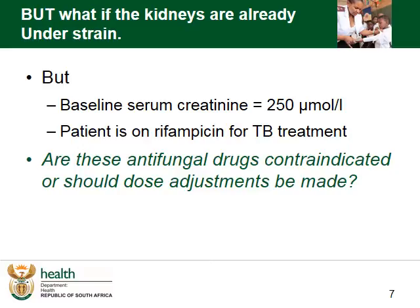Patients with cryptococcal meningitis can be very sick on admission and may already have a strain on the kidneys. Our patient, Mr. ZZ, has a baseline creatinine of 250 micromoles per liter and is also on rifampicin for TB treatment. Are these antifungal drugs contraindicated, or should dose adjustments be made? Can we give our normal induction phase of TB treatment?